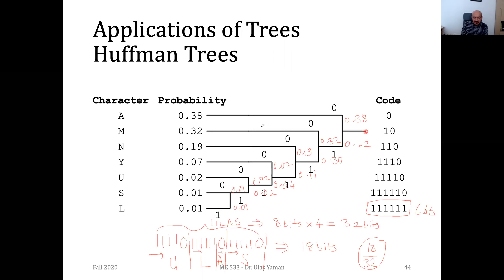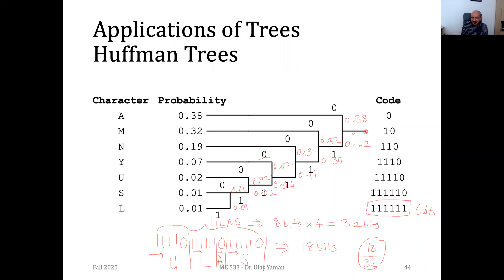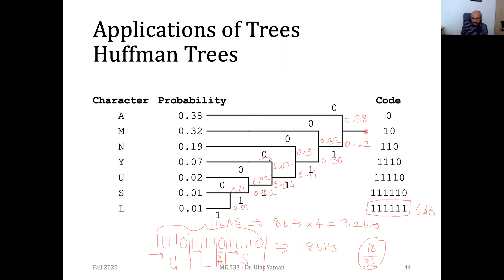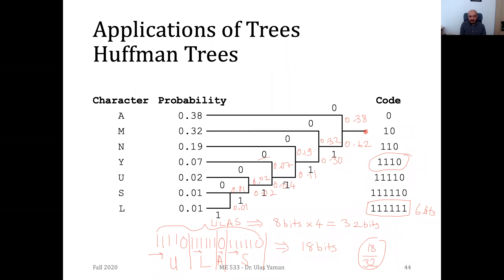If you want to represent the letter Y, you do a traversal from the root: 1, 1, 1, 1, and 0 — starting from the children of the root since no 0 or 1 is assigned to the root itself. So 1, 1, 1, 0 represents Y. For N, you count 1, 1, 0. For L, you follow the path and have six 1s at the end of the representation.